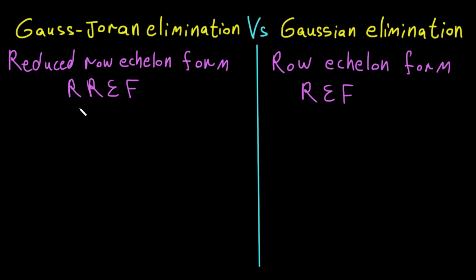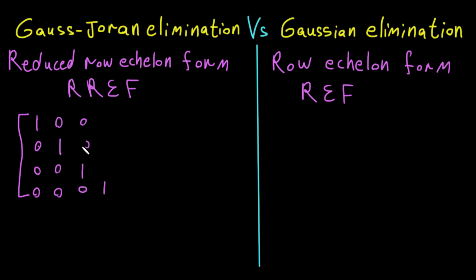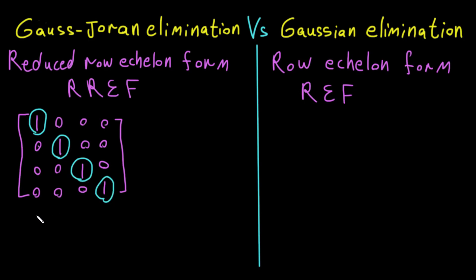We have done many Gauss-Jordan elimination examples, so now we need to distinguish between the two. Here is what REF looks like: it has a leading one here, one here, one here — and for a bigger matrix, the same pattern applies. Each leading one appears in its position, and the bottom row may have zeros. For REF, it looks like this — ones along the diagonal, with zeros below.